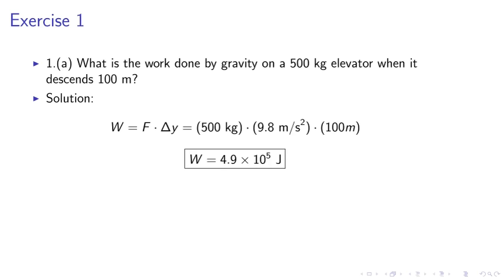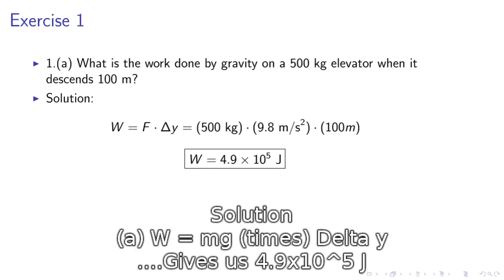The solution is W equals F times delta y. The force is mg, which is 500 kg times 9.8 meters per second squared times 100 meters, which gives us a work of 4.9 times 10^5 joules.